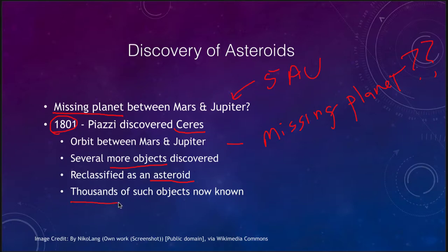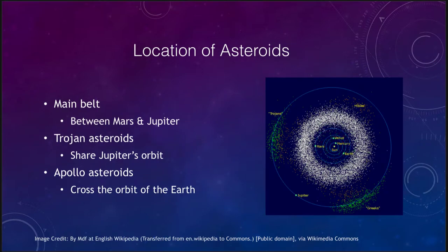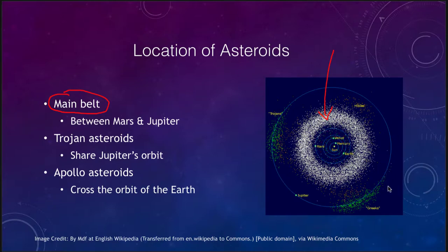Now we know of many thousands of objects, and the vast majority of them orbit between Mars and Jupiter. There are different types of asteroids in different locations. We have the main belt asteroids, where we find most of them, between Mars and Jupiter. Most of them orbit in circular or slightly elliptical orbits and travel in between those two planets.